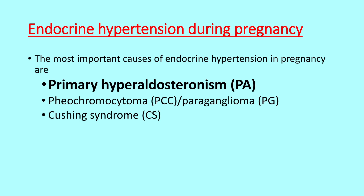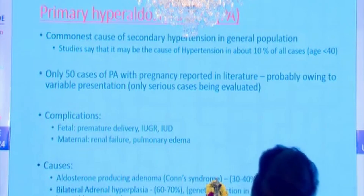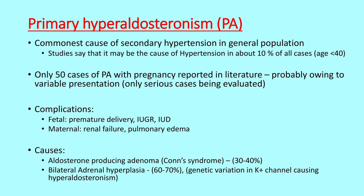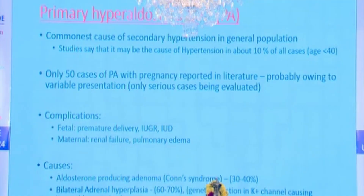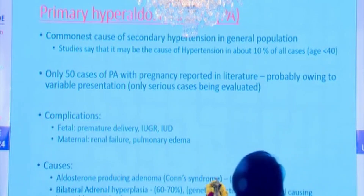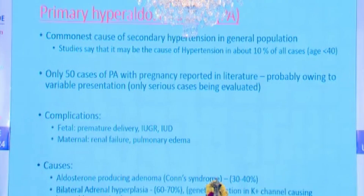First, we will come to primary hyperaldosteronism. It is a common cause of secondary hypertension among the general population — almost 10% of all secondary hypertension is because of primary hyperaldosteronism. But in pregnancy, only few cases have been reported so far, maybe because of variable presentation. It can cause multiple complications including fetal complications such as premature delivery, IUGR, IUD, or maternal complications including renal failure and pulmonary edema. Causes include aldosterone-producing adenoma (Conn's syndrome) in about 30-40% and bilateral adrenal hyperplasia in 60-70% of all primary hyperaldosteronism.